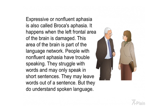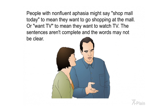Expressive or non-fluent aphasia is also called Broca's aphasia. It happens when the left frontal area of the brain is damaged. This area of the brain is part of the language network. People with non-fluent aphasia have trouble speaking. They struggle with words and may only speak in short sentences. They may leave words out of a sentence, but they do understand spoken language.